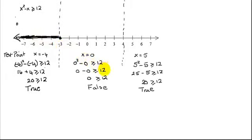So during the pause, I wrote down what happens when you plug x equals 0 and x equals 5 into the original inequality. And as you can see from when x equals 0, I get 0 minus 0, which is 0. Is 0 greater than or equal to 12? That is false. Therefore, I do not want this middle region.